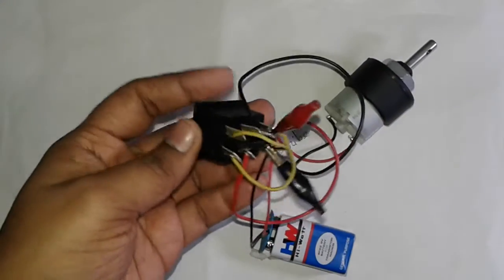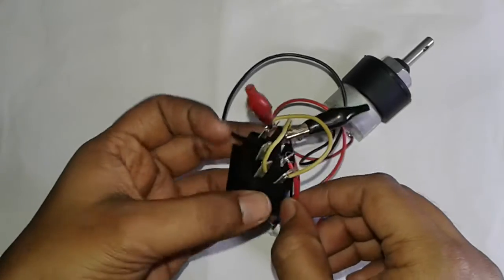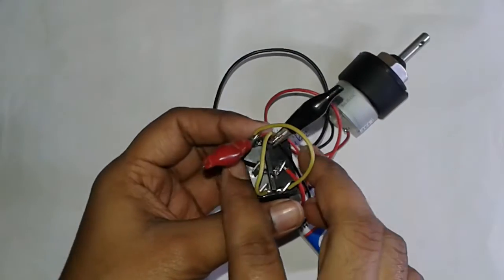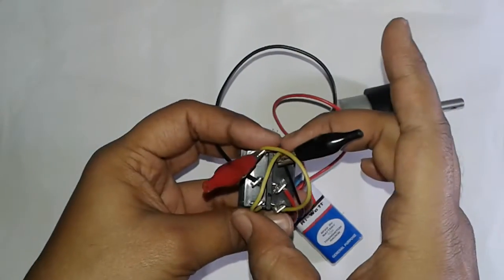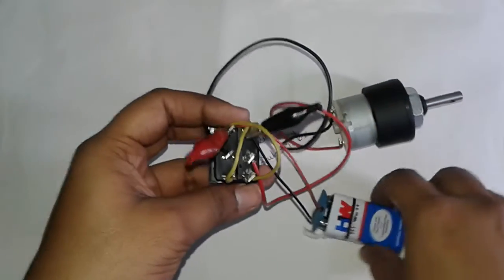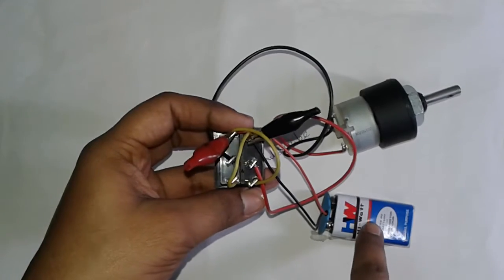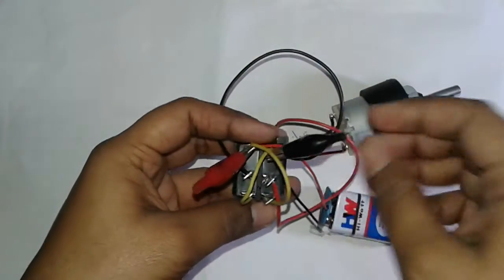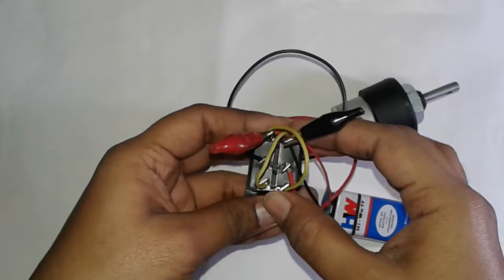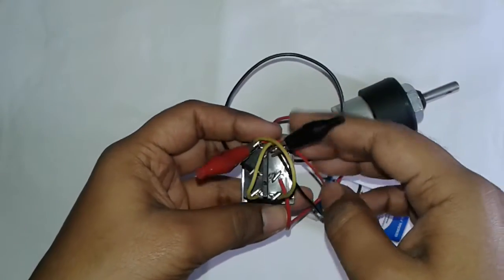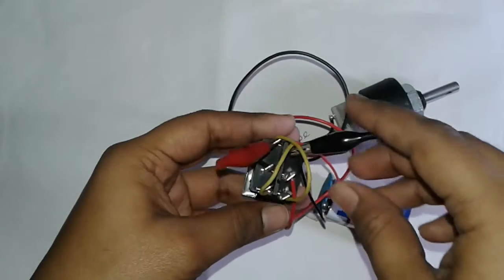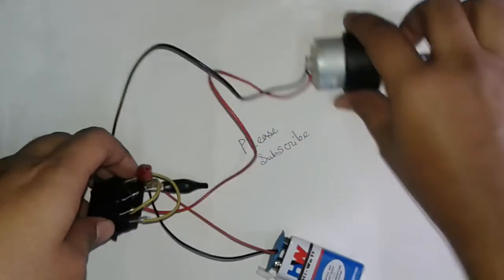It is very easy to control the rotation of a DC motor. Just you need to attach the middle two pins with the motor, attach the cross two pins together, and attach the battery source to these two pins or these two pins, any one of these two sides.